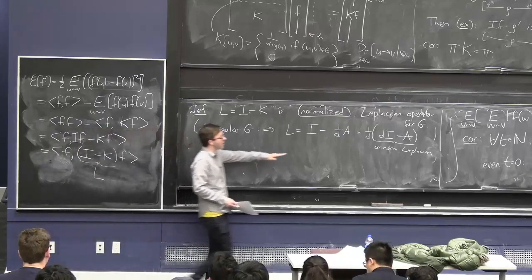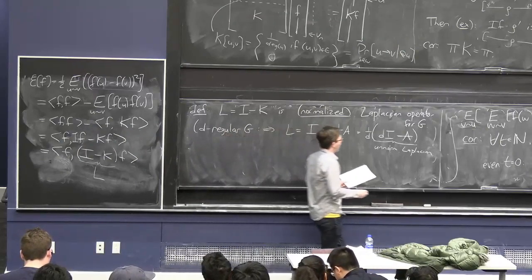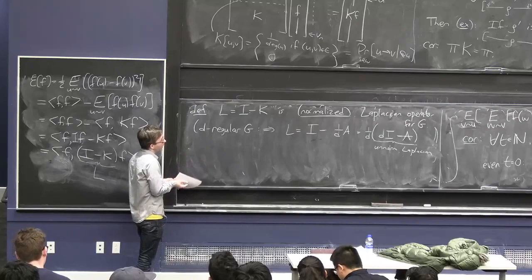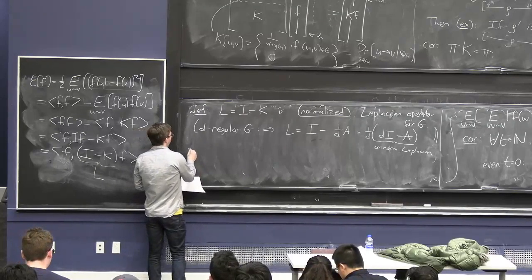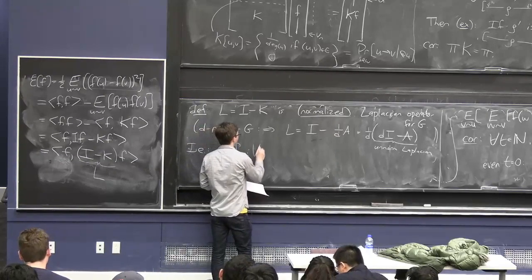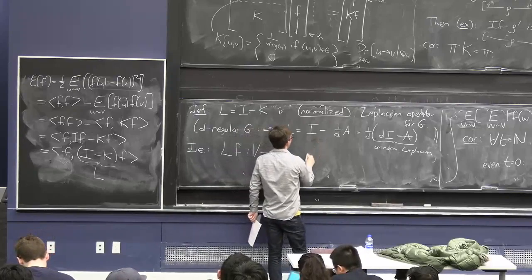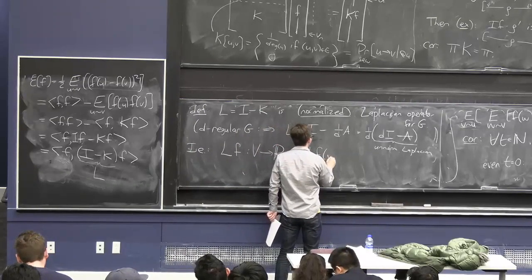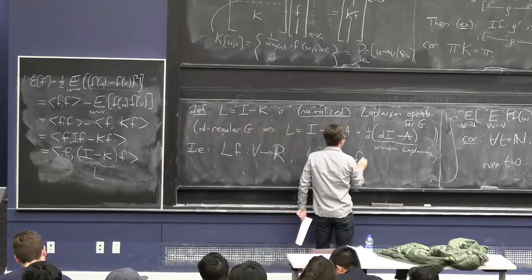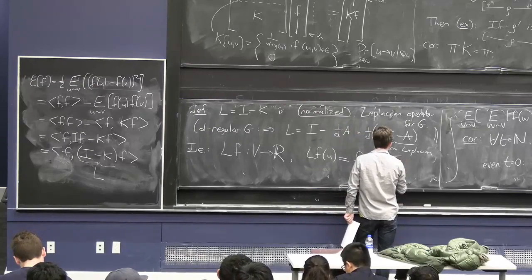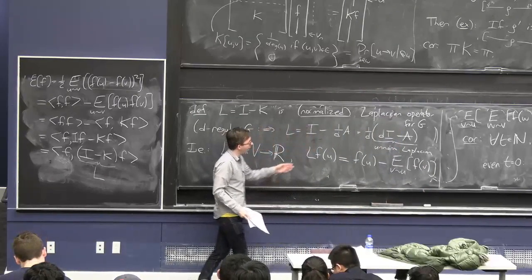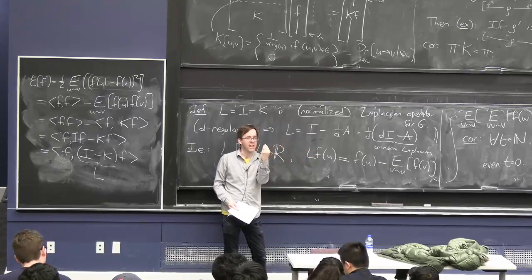For this class, these will be our definitions. L is a matrix or operator — it takes vectors to vectors, or functions to functions. If you have a function f and you apply the Laplacian L to it, you get a new function Lf. By definition, (Lf) at vertex u is f(u) minus the expected value or average value of f(v) on the neighbors of u. So applying L to a function f is like keeping f but at each vertex subtracting the average of the neighbors.